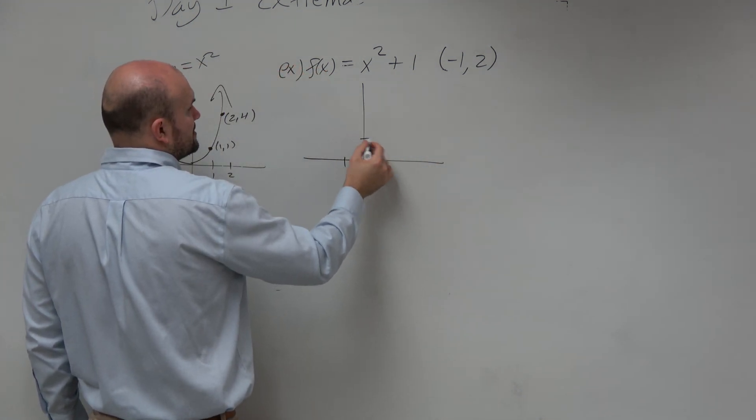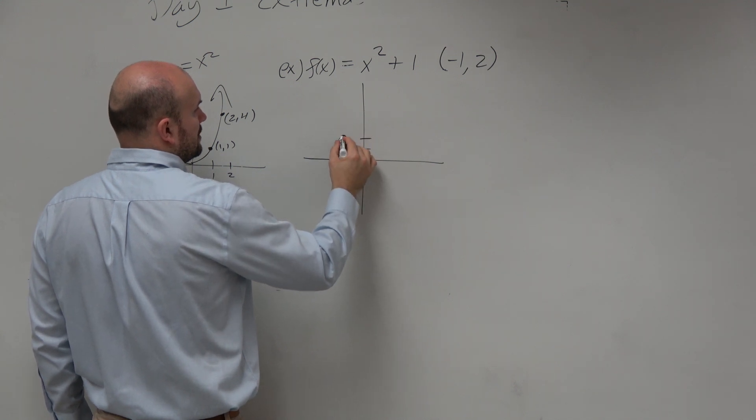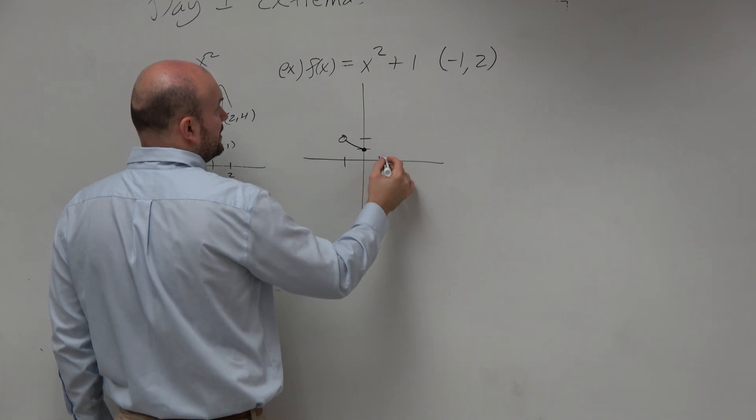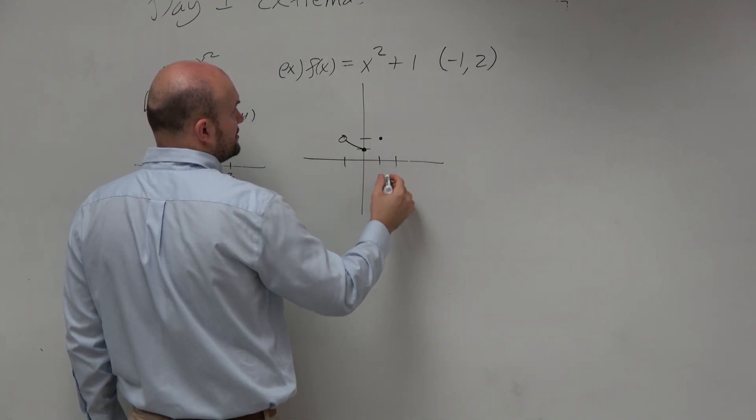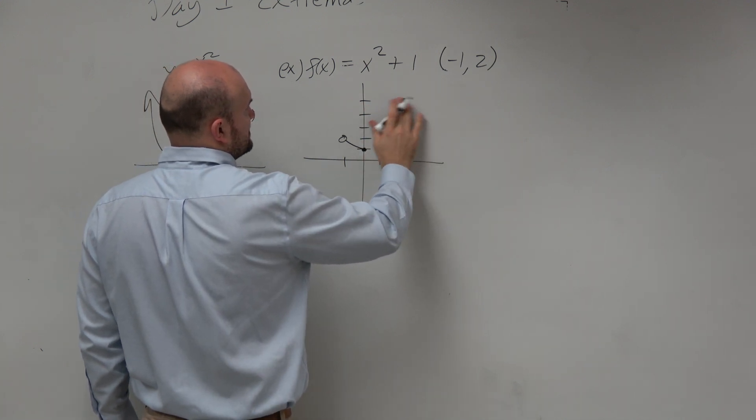So that's negative 1. So that's going to go up to 2, 0, at 1 is 2, and then at 2 is 5. 1, 2, 3, 4, 5. Oops, that's an open circle.